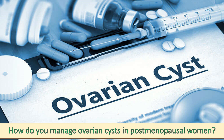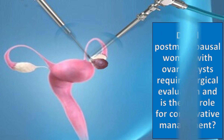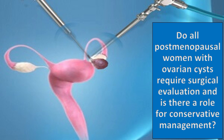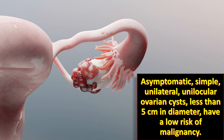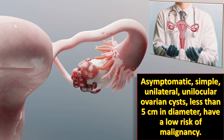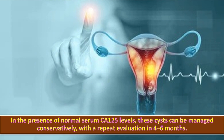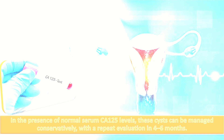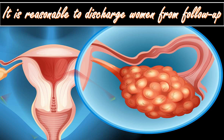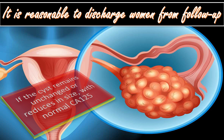How do you manage ovarian cysts in postmenopausal women? Do all postmenopausal women require surgical evaluation? Asymptomatic, simple, unilocular, unilateral ovarian cysts less than 5 cm in diameter have low risk of malignancy. In the presence of normal CA-125 levels, these cysts can be managed conservatively with a repeat evaluation in 4 to 6 months. It is reasonable to discharge women from follow-up after 1 year if the cyst remains unchanged or reduced in size with normal CA-125, taking into consideration the woman's wishes and surgical fitness.